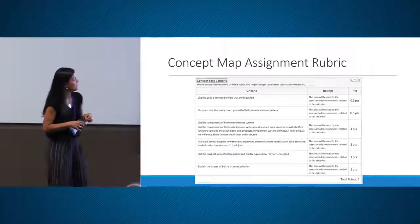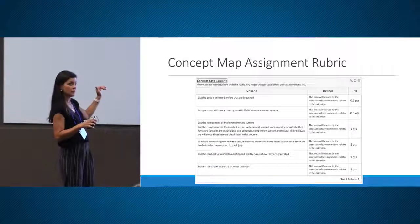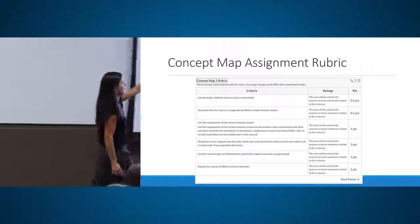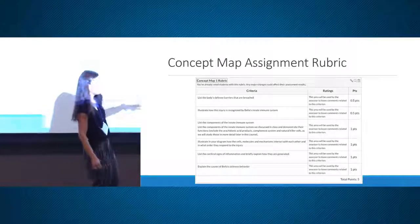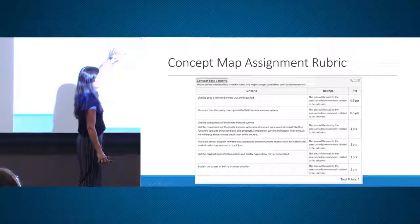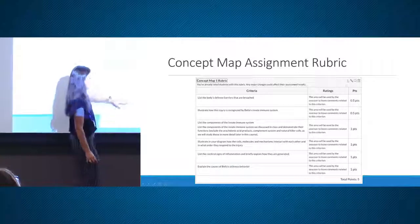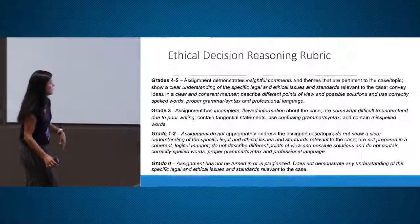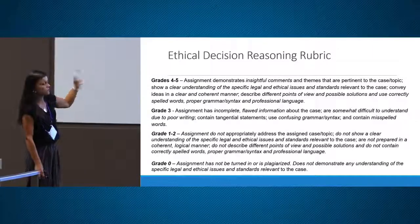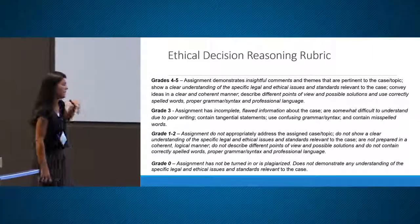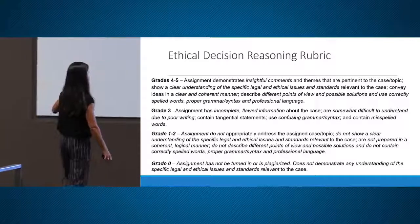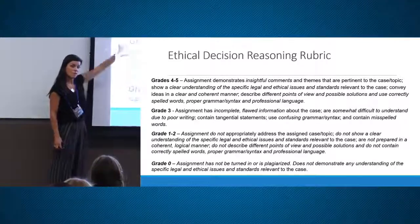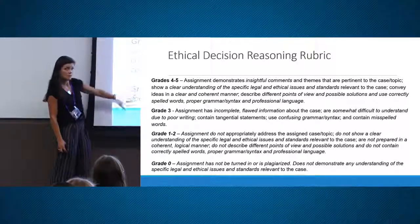This is what that rubric looks like in Canvas. That little button there lets you edit the points. These are all the criteria I have that describe my concept map assignment. This is the rubric I use for the ethical decision reasoning assignment in my course.